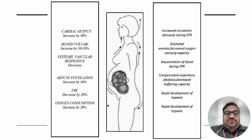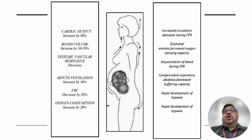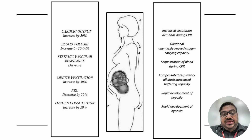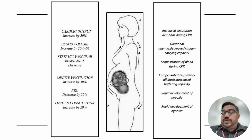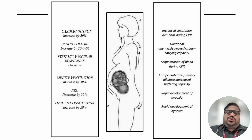Physiological changes in pregnancy include a 50% increase in cardiac output, 30–50% increase in blood volume, decreased systemic vascular resistance, 50% increase in minute ventilation, and a 20% decrease in functional residual capacity — meaning patients don't tolerate hypoxia well. During CPR there is increased circulatory demand, dilutional anemia, decreased oxygen-carrying capacity, compensatory respiratory alkalosis, decreased blood buffering capacity, and rapid development of hypoxia.